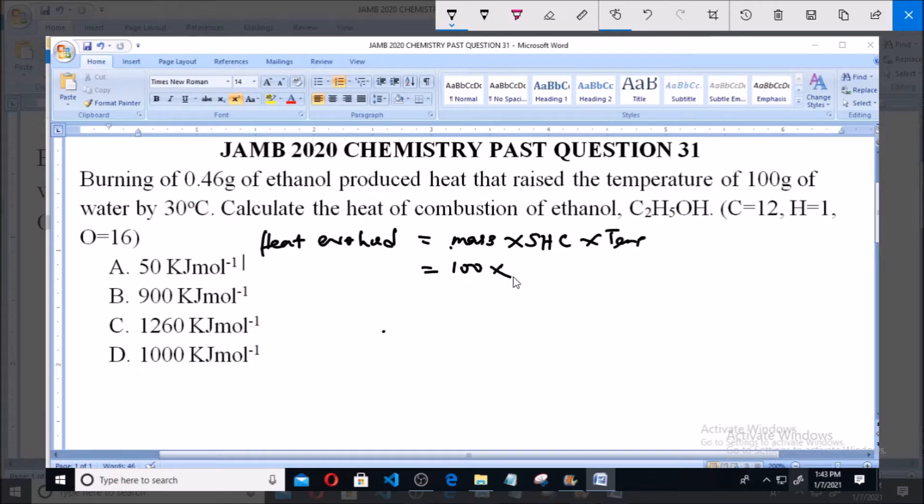...multiplied by 4.2, the specific heat capacity of water, multiplied by the temperature rise of 30, which gives us 12,600 joules. This is the heat evolved from combustion of ethanol.